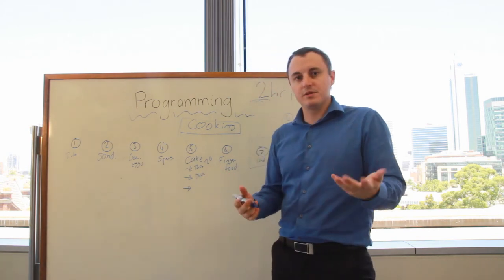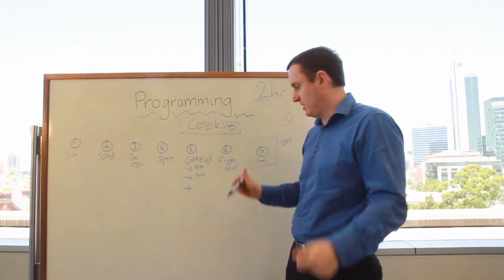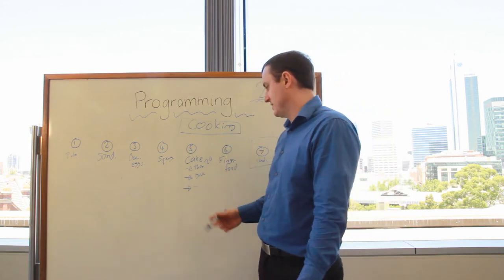Or we might, if we've got four students, do four different types of cakes: a carrot cake, a banana cake, something like that, and then we can do our taste testing stuff at the end.